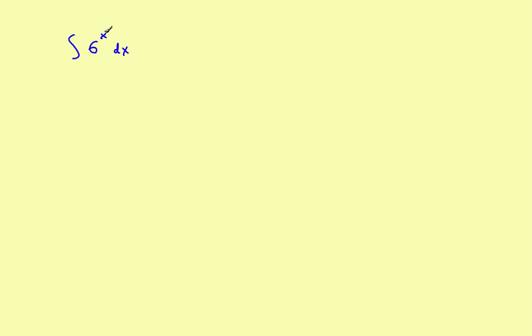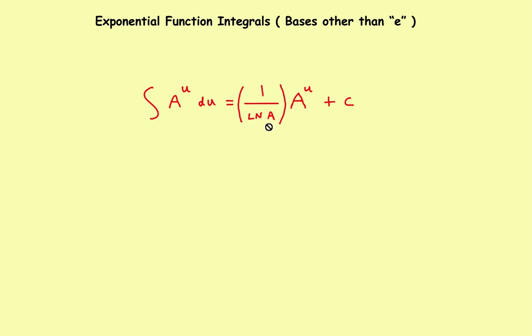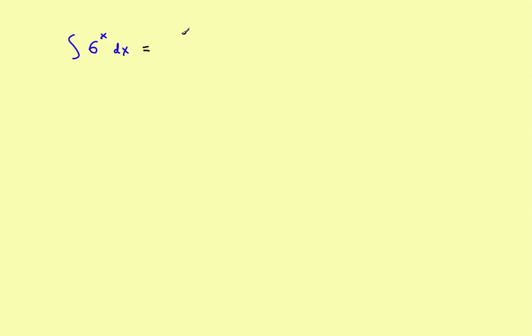The first one: you've got an integral of 6 raised to the x power dx. Since this is just a simple x, you will not need u-substitution. This is about as simple as an example can get. Just go back to your formula and plug it right in — it will be 1 over the natural log of the base times the original function, plus c.